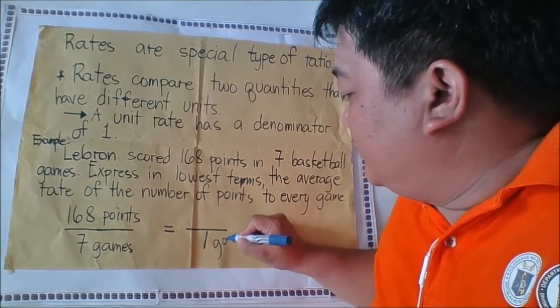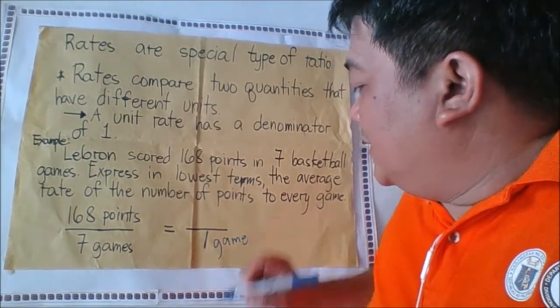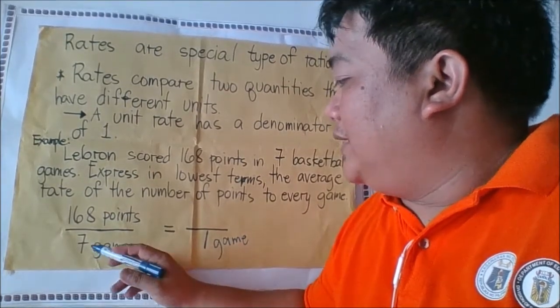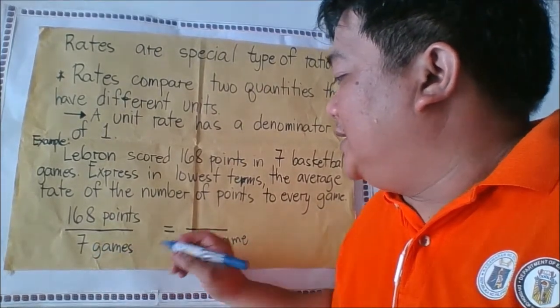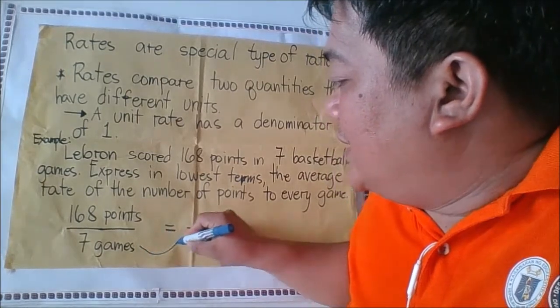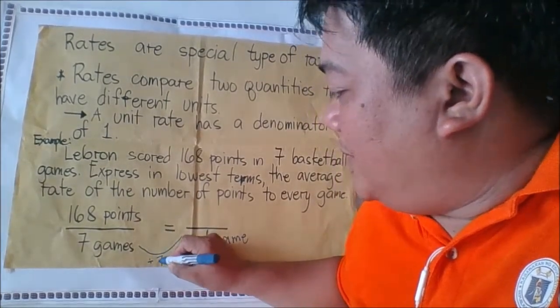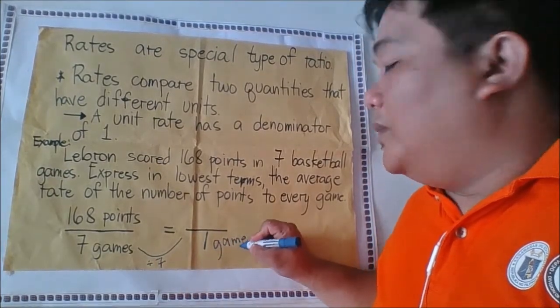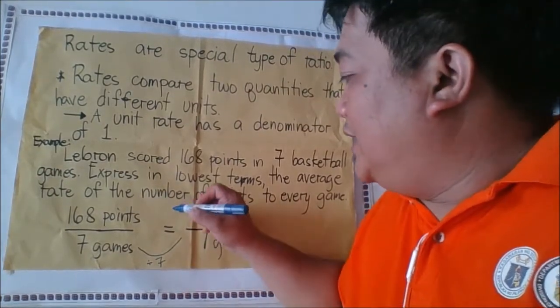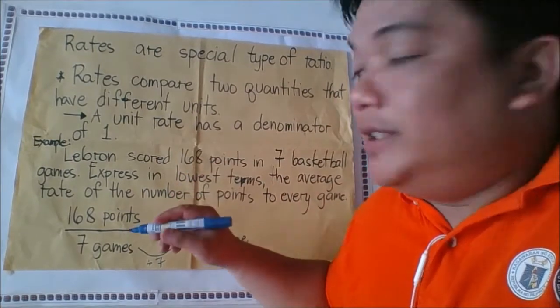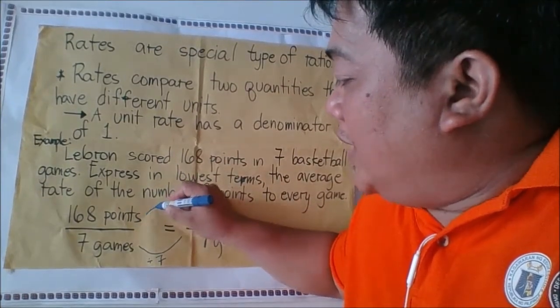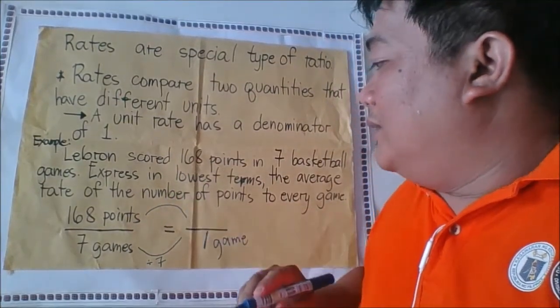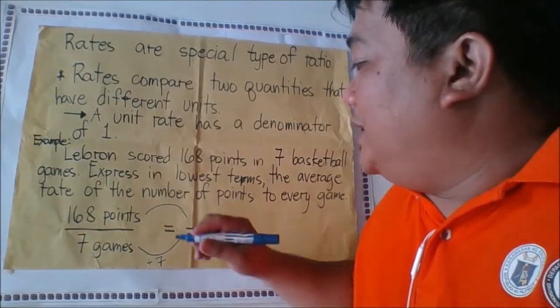How did you get one here? Simply by dividing it by 7. So 7 divided by 7 is equal to 1, one game. Then to be fair, we're also going to divide 168 divided by 7.